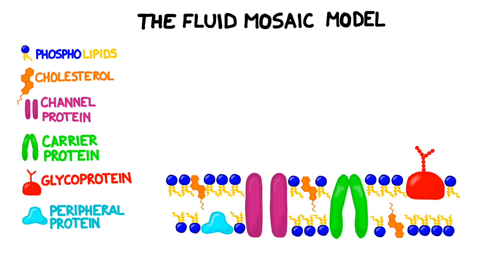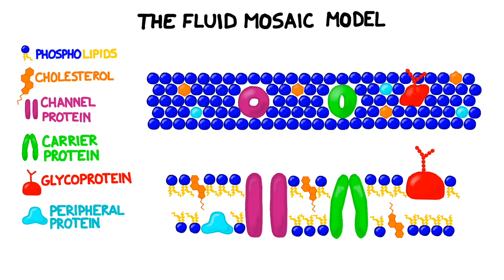To wrap up, let's consider this idea called the fluid mosaic model. We've learned that the cell membrane is fluid thanks to cholesterol, but what about this mosaic idea? A mosaic is a piece of art, usually on a wall or a floor, that's made up of small pieces of pottery, stone, or tile. The pieces are usually different colors and arranged in a pattern or to form a picture. For this video, we've been looking at the membrane from the side, but if we flip it around and view it from the top, it does look a lot like a mosaic.